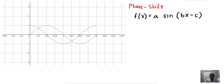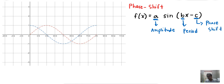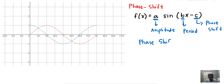So this A affects the amplitude, this B affects the period of the graph, and the value of C is affecting the phase shift of the graph. The formula for phase shift is: phase shift = C divided by B.